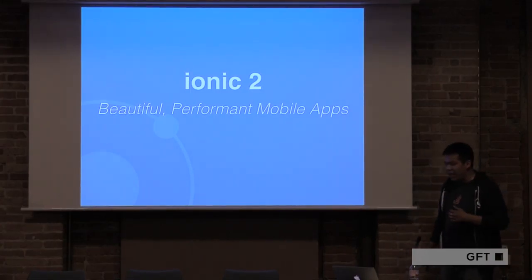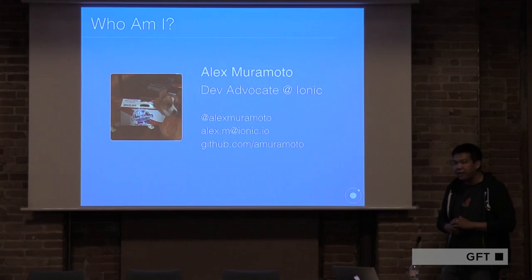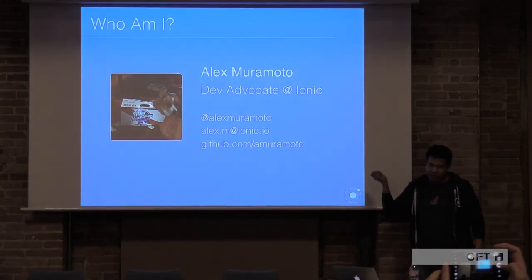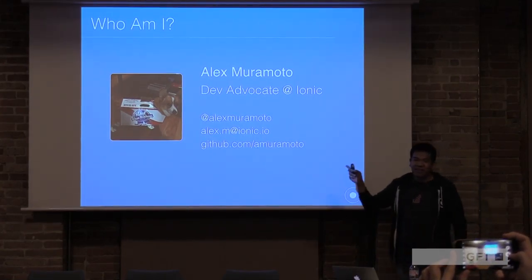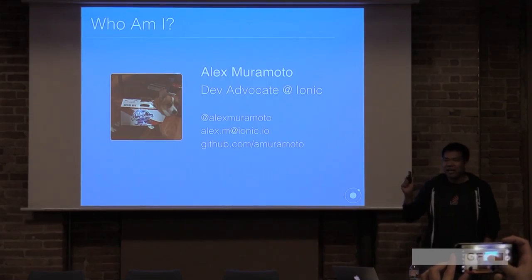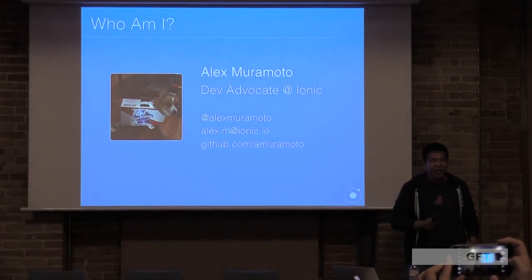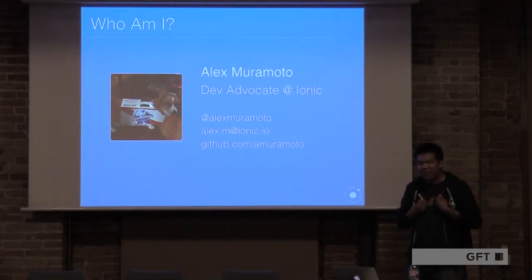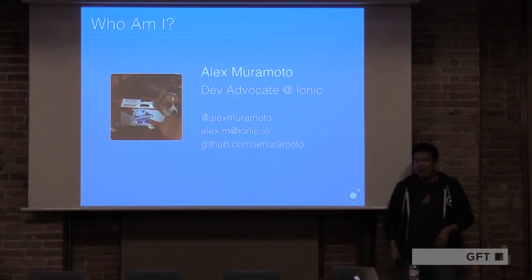I'm going to talk a little bit about Ionic 2. My name is Alex. I'm the dev advocate at Ionic. You can reach me anytime on Twitter, directly by email. I'm also on GitHub — I post samples and such on GitHub all the time. That's my little dog Allie. She is exactly as angry at me as she looks in that photo. My name is very long and very difficult to spell, so this is the easiest way to identify me online.